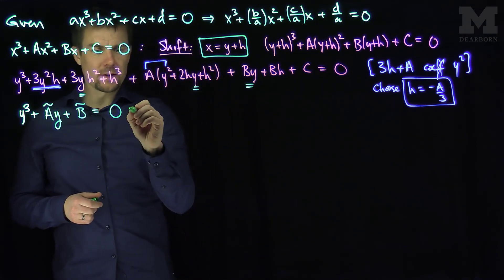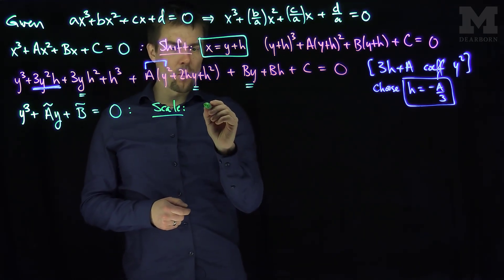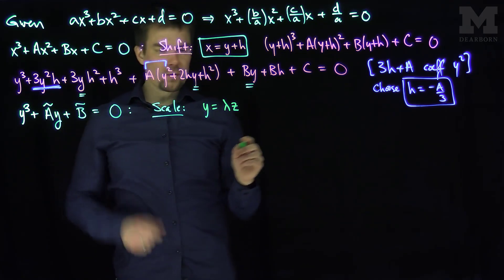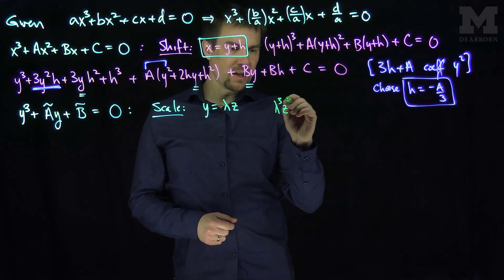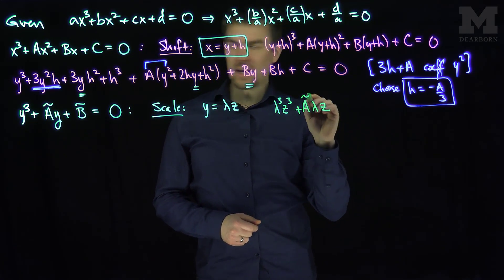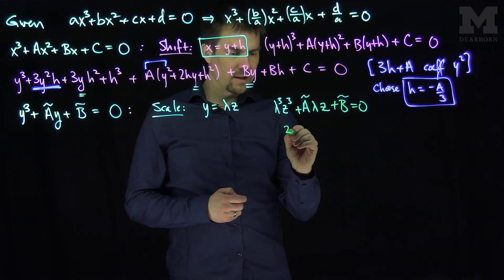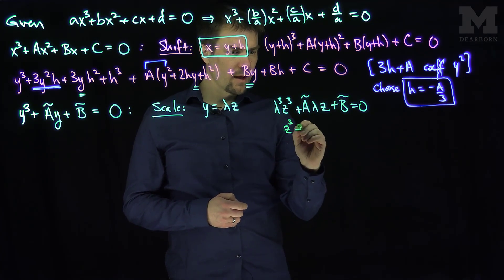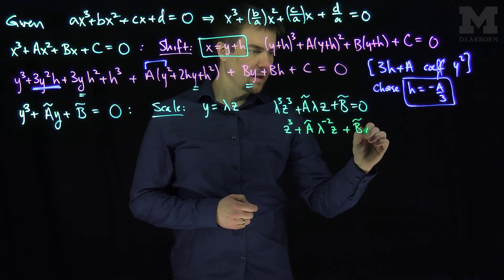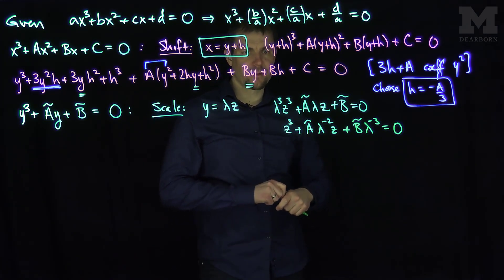The next phase is to scale the equation. What I'm going to do is let y = λz, a multiple of z. If I do that, I'm going to have λ³z³ + ã·λz + b̃ = 0, which is the same as z³ + ã·λ⁻²z + b̃·λ⁻³ = 0, by multiplying through by λ⁻³.